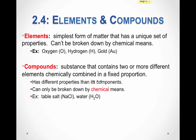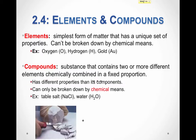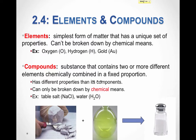To demonstrate that compounds have different properties than the elements that make them up, consider this example. Sodium is a soft, shiny metal that reacts violently with water, producing flames. Chlorine gas is a toxic green gas. If we combine this soft, shiny, explosive metal with this toxic green gas, we get the compound NaCl, or table salt. Clearly, this compound has very different properties than the elements that made it up.